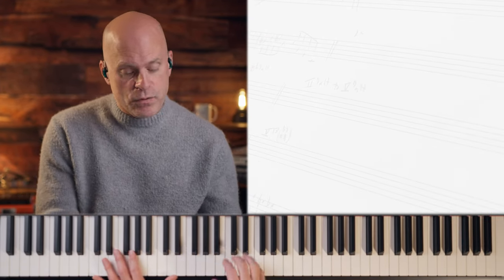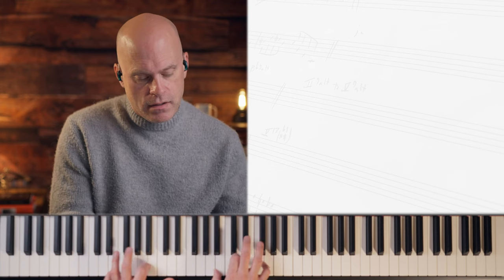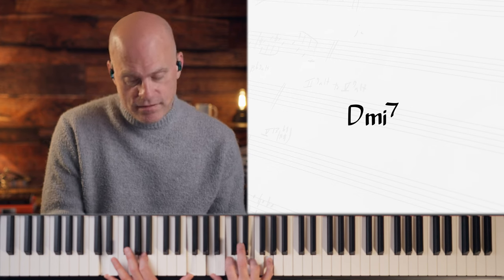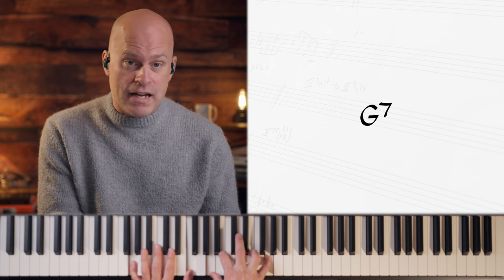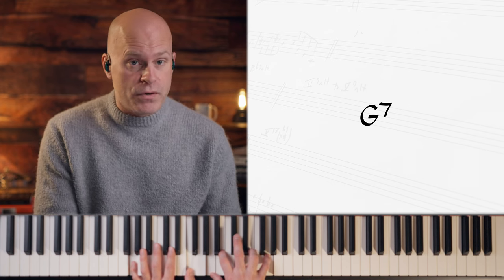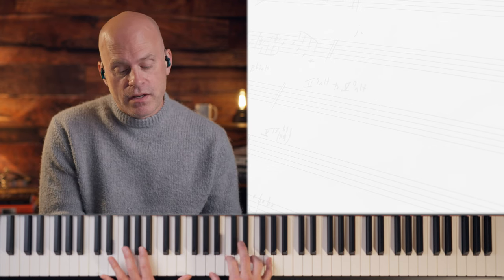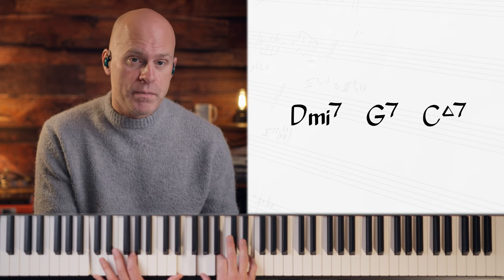Let's quickly talk about the difference between a 2-5-1 in a major key and a 2-5-1 in a minor key. If we're in C major, the 2 chord is a minor 7. The 5 is a dominant. In its basic form it's completely unaltered, no altered tensions, but you can have alterations. And then a major 1 chord. 2 minor 7, 5 dominant 7, 1 major 7.